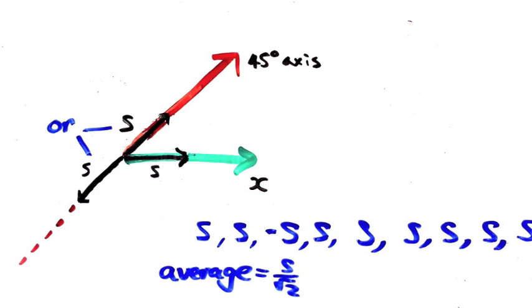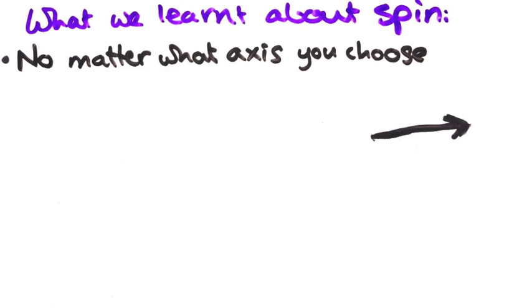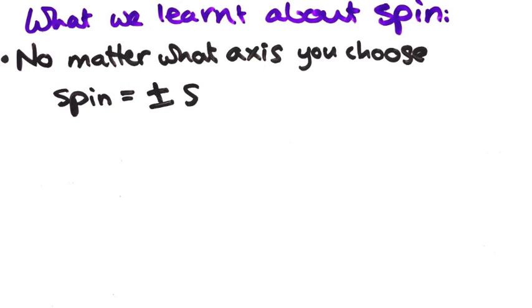Again, though each individual trial was unexpected, the average result is what we thought we'd get. Let me summarize the two things we can learn about the spin of an electron from these kinds of experiments. Firstly, no matter what direction we pick to measure the spin in, its value will always be positive s or negative s, where s is equal to this small number.